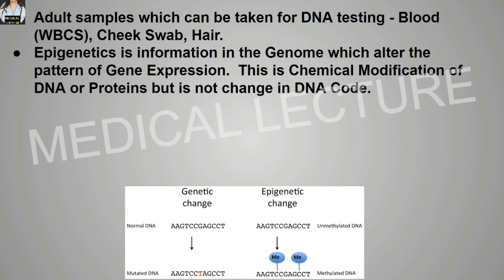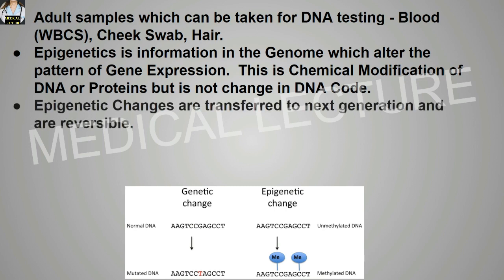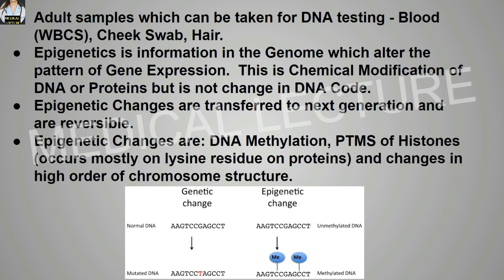Epigenetics is information in the genome which alters the pattern of gene expression. This is chemical modification of the DNA or protein, but there is no change in the DNA code. Epigenetic changes are transferred to the next generation and are reversible. They are caused by DNA methylation, post-translational modifications of histones — occurring mostly on lysine residues — and changes in the higher-order chromosome structure.